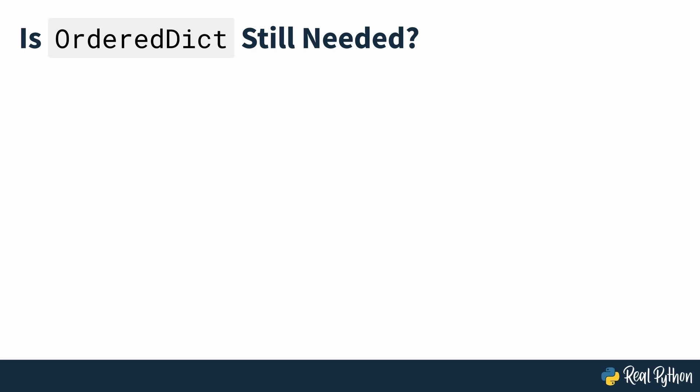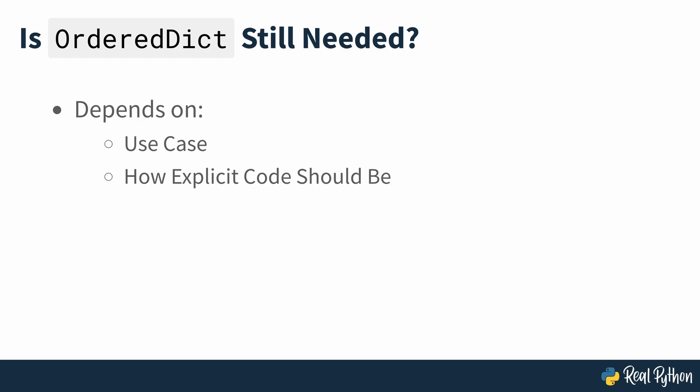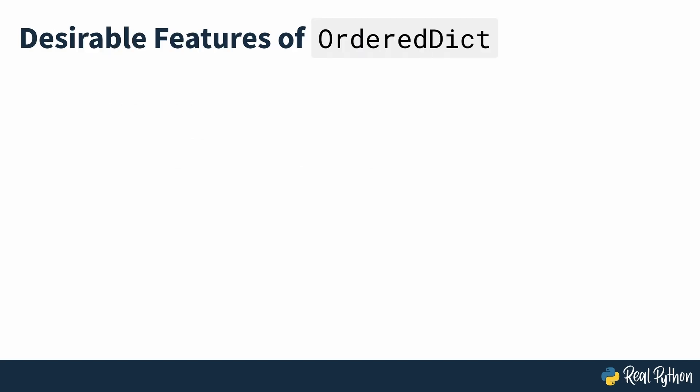At this point, a question arises: is OrderDict still needed after this new implementation? The answer depends on your specific use case and also how explicit you want to be in your code. Some features of OrderDict still make it valuable and different from a regular Dict. First, intent signalling. If you use OrderDict over Dict, then your code makes it clear that the order of items in the dictionary is important. You're clearly communicating that your code needs or relies on the order of items in the underlying dictionary.